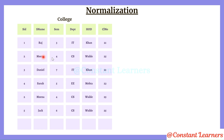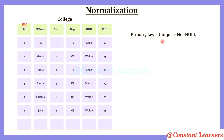If you notice, we have two rows with entirely similar data. Here student ID is 2, Mena, 4, CS, etc. — and again we have student ID as 2, Mena, 4, CS, etc. But is this possible? No, it's not, because student ID is the primary key and the primary key is always unique and not null. So it cannot accept the number 2 again. This redundancy can be avoided with the help of a primary key, which helps us to prevent redundancies as well as to uniquely identify any row in the table.